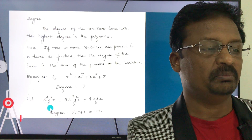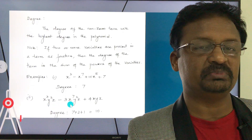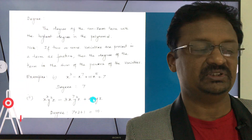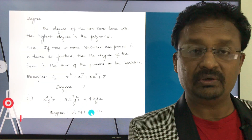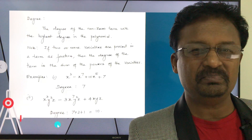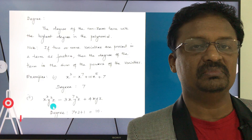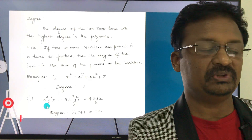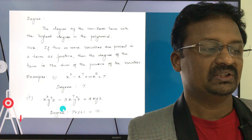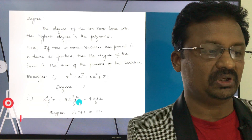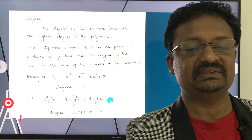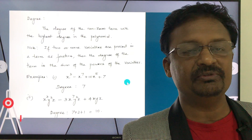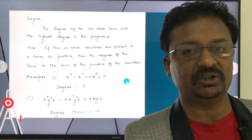Now consider a three-variable polynomial: cx³y²z - 3x⁷y²z + 4xyz. There are three terms. To find the degree, sum the powers of each term: first term is 3+2+1=6, second term is 7+2+1=10, and the third term is 1+1+1=3. The highest is 10, so the degree of this three-variable polynomial is 10.